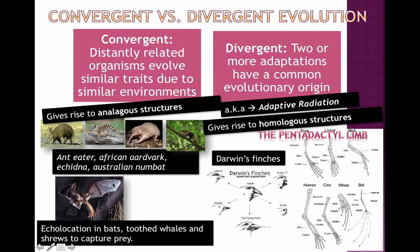Another example is echolocation, which is a trait bats, toothed whales, and shrews use to capture prey by sending out sound and detecting how long it takes to come back — essentially sonar, creating a kind of spatial map. Whales, bats, and shrews have very different evolutionary origins, but they have all evolved echolocation. So that's an example of an analogous behavior.